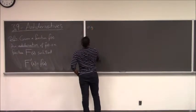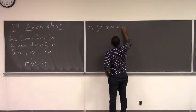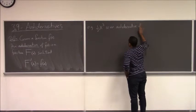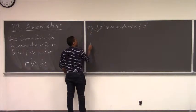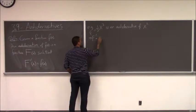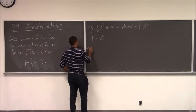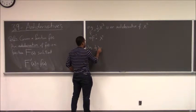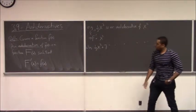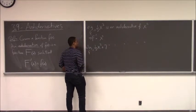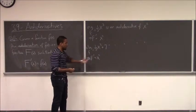And 'an' is used with purpose here, with intent, because such a function is not unique. For example, one-third x cubed is an antiderivative of x squared, because if I call this big F, then if I take F prime, the power rule would tell me that x squared would be the result. However, one-third x cubed plus seven is also an antiderivative of x squared — because the derivative of seven is zero, so I would again get x squared.